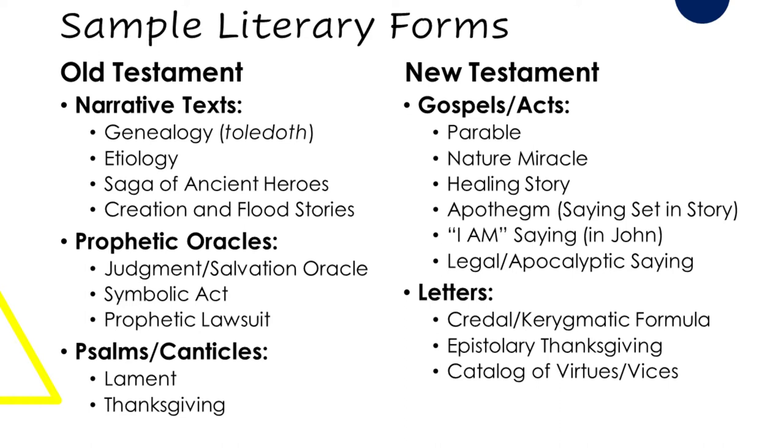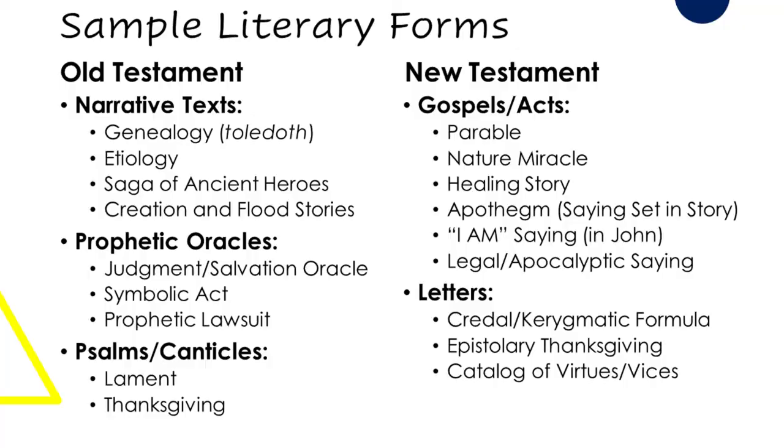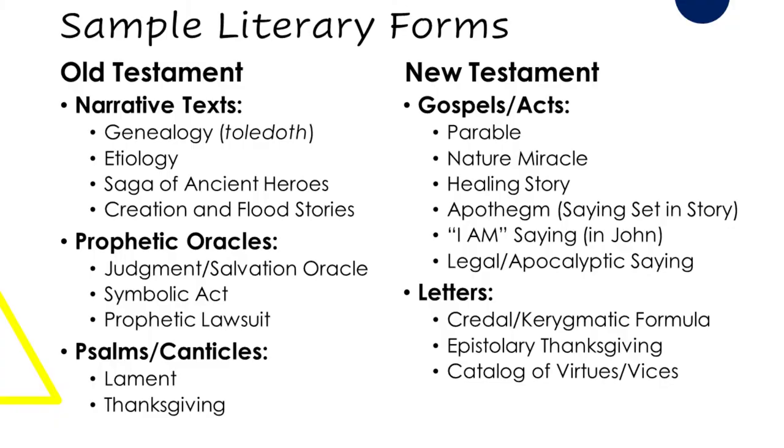When we look at literary forms, you can see on your screen a whole catalog of different ones — this is hardly an exhaustive list. Scholars have detected all sorts of different literary micro-genres that show up in the biblical text. Where do scholars get these ideas? They don't make them up. Rather, they look to ancient Near Eastern literature or ancient Greco-Roman literature written around the same time as the biblical texts, and see how those kinds of literature overlap with what we have in the Bible.